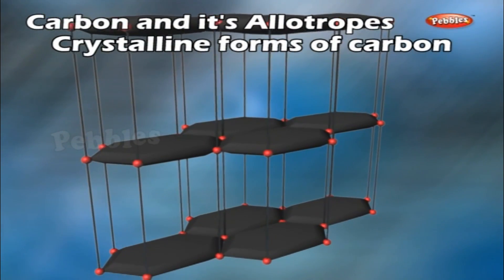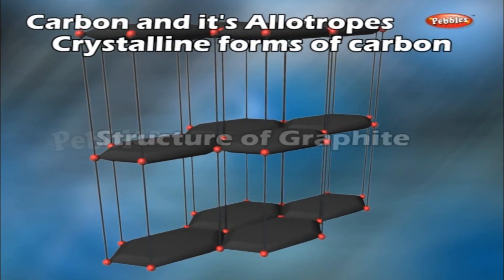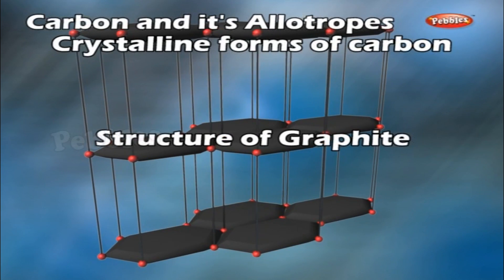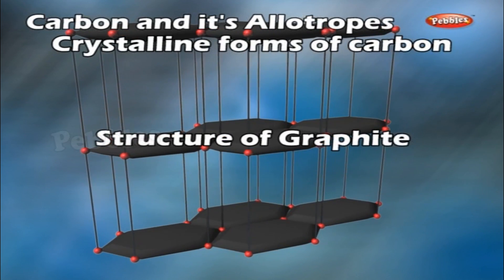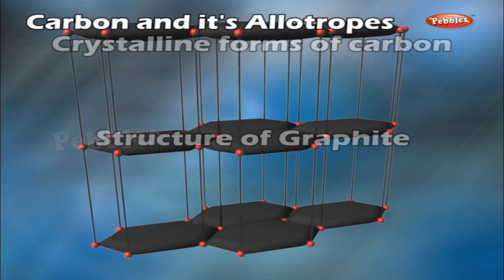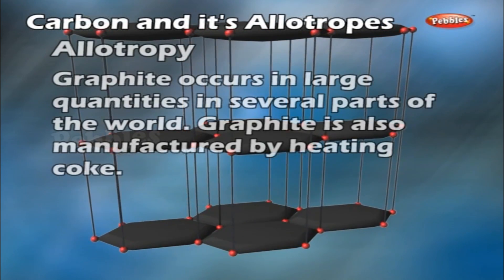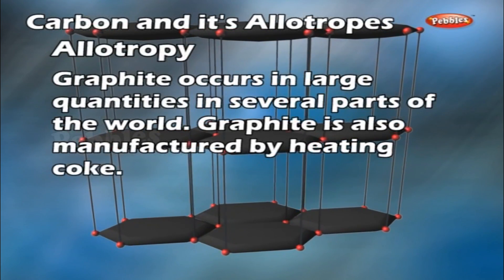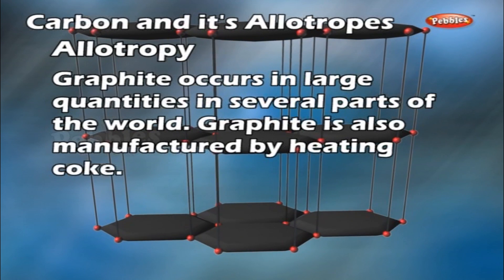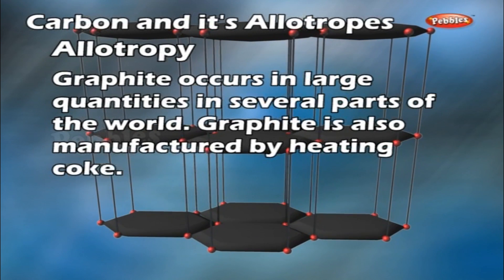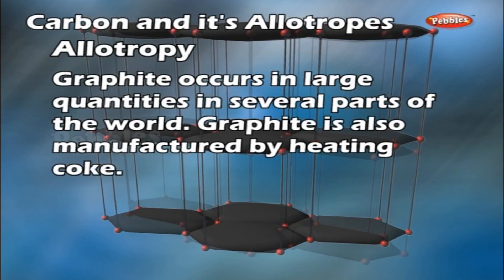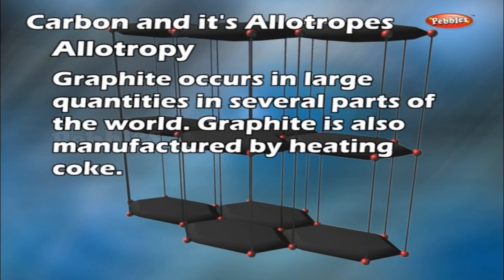Crystalline forms of carbon — Graphite: Graphite occurs in large quantities in several parts of the world. Graphite is also manufactured by heating coke.